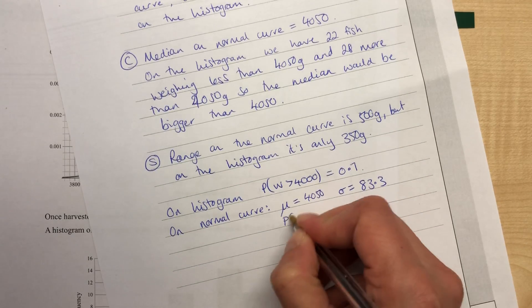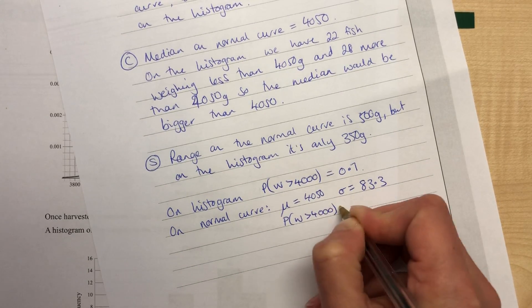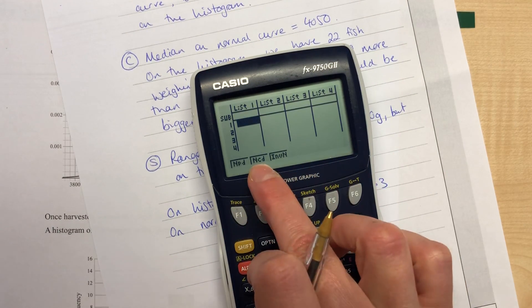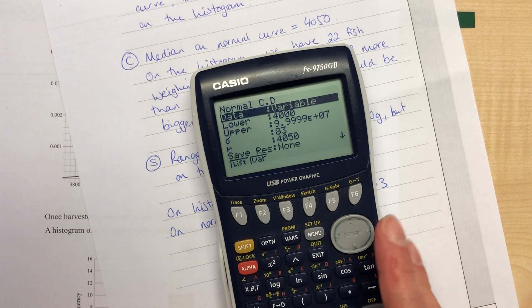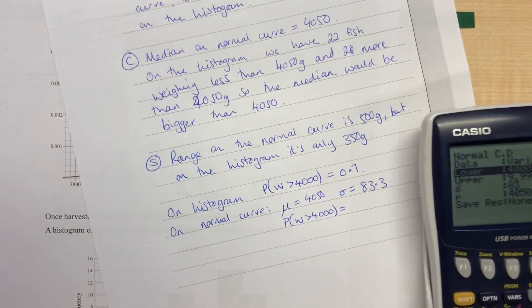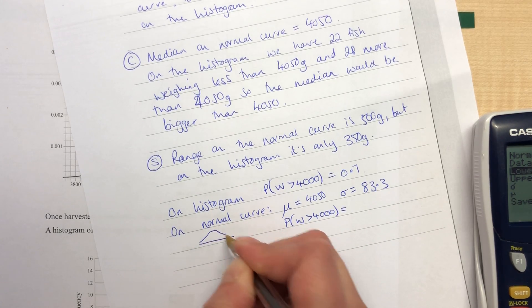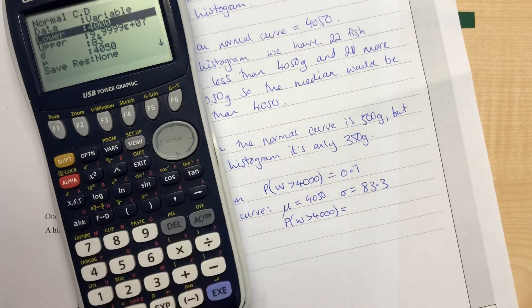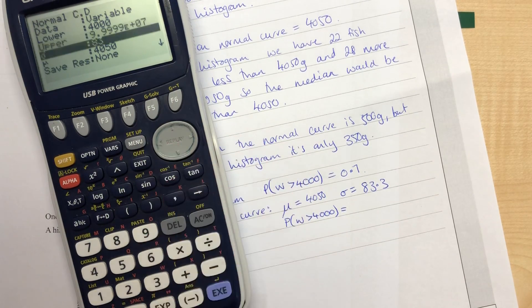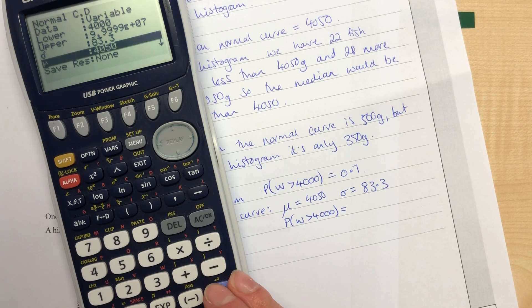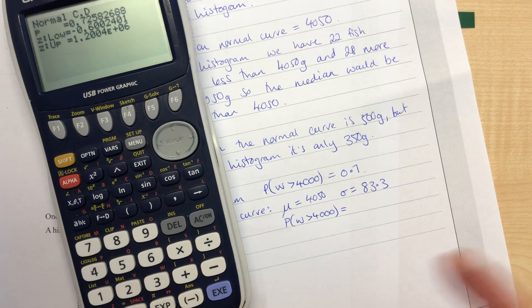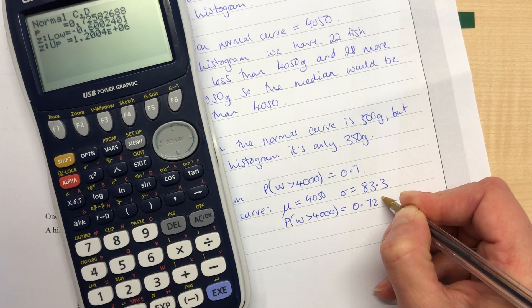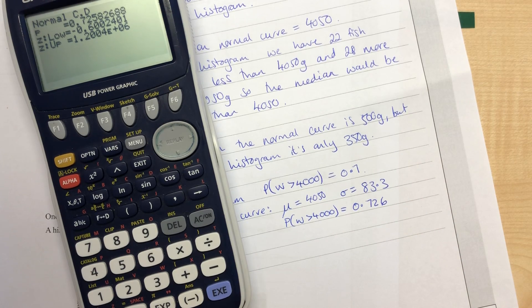So then if we put the probability of it being more than 4,000, we can use our graphics calculator to do that. I'm working out a probability, so just using the NCD one. Make sure that that says variable. Our lower limit, we're doing it with this little curve here, going more than 4,000. All right, so our lower limit is 4,000. Our upper limit is something very big, sigma 83.3, and the mean is 4,050. So our probability here is 0.72. Let's round it up. 0.726.